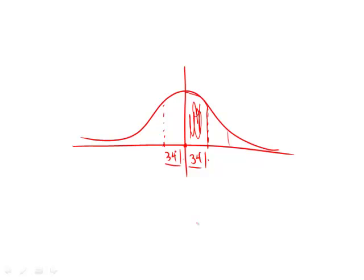Now how many fall within two standard deviations? The percentage that falls between one and two standard deviations is roughly 13%, and going in the direction below the mean is also 13% — there's always symmetry about the mean. In both cases you have 47% falling within two standard deviations on both sides, meaning about 94 — actually 95% once you round up a little with the 13 — so 95% of everyone falls within two standard deviations.